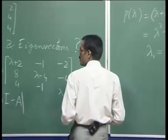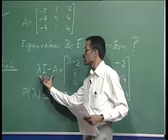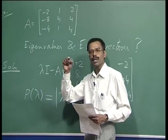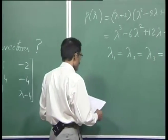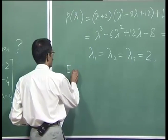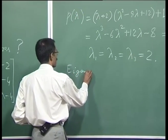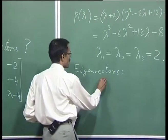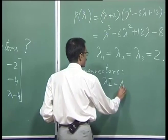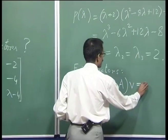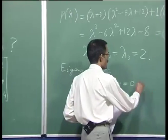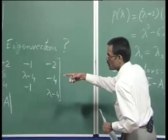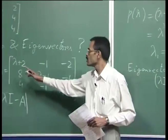For doing that, we need to write the full equation lambda I minus A times vector v equal to 0. To find eigenvectors, we take lambda I minus A times v equal to 0 and put lambda equal to 2.